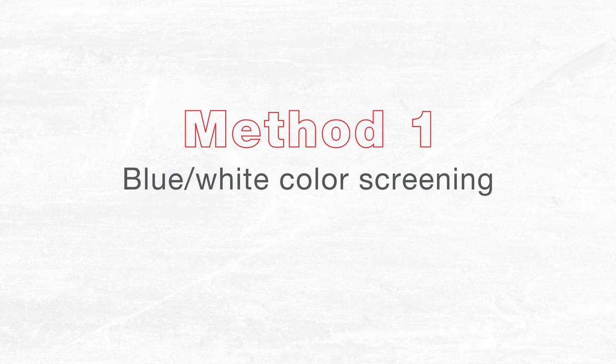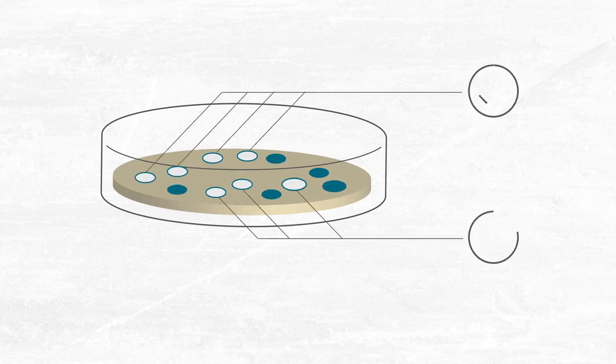Method one, a classic way. When your DNA of interest is inserted into the plasmid, a gene is disrupted and the correct bacterial colony appears white instead of blue.